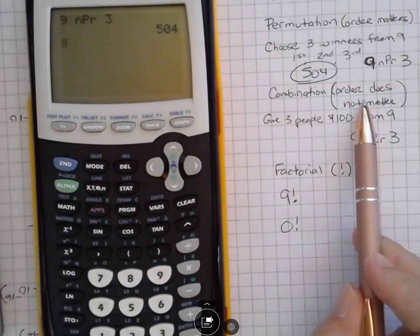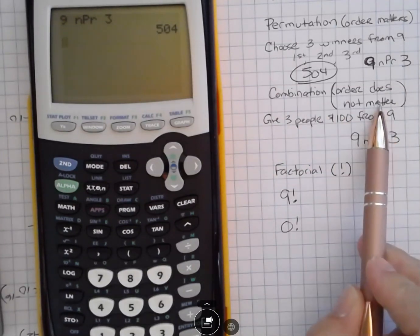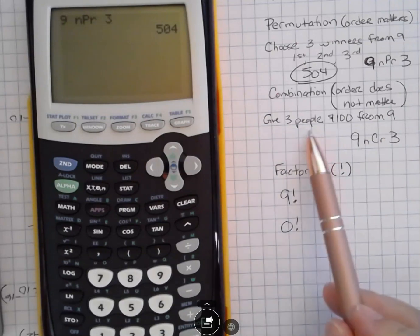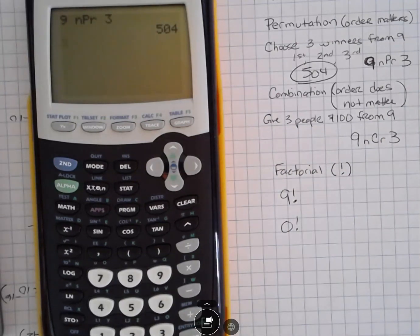So then if I want to do a combination, then the order does not matter. So that would be something like you're going to give three people a hundred dollars from nine people. Everybody gets a hundred dollars, whether they're chosen first, second, or third doesn't matter. They're still going to get the same prize.